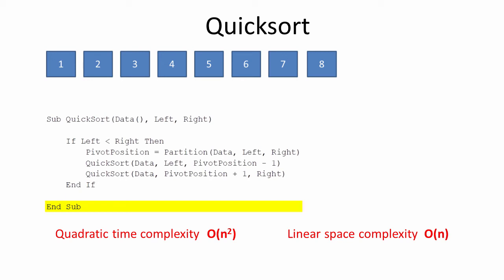In the best-case scenario, each recursive invocation would examine about half of the original dataset, so fewer recursive calls will be needed. In fact, doubling the input data would increase the depth of recursion by only one level. So in the best-case scenario, quicksort has O(log n) space complexity.